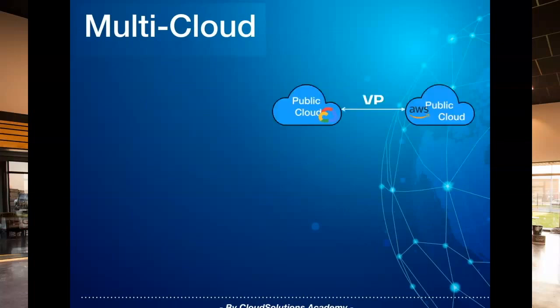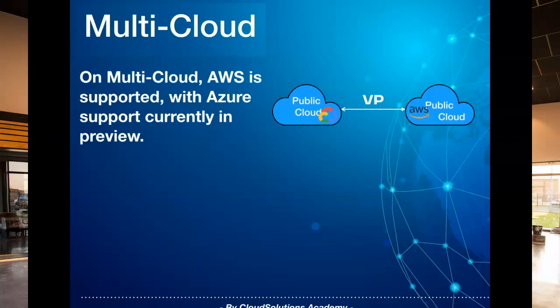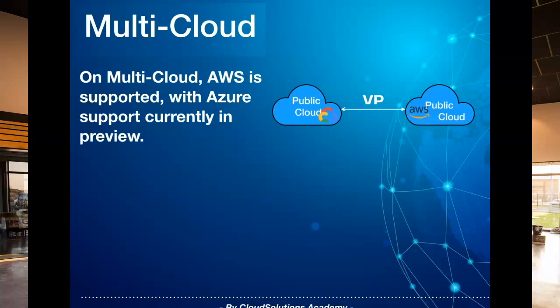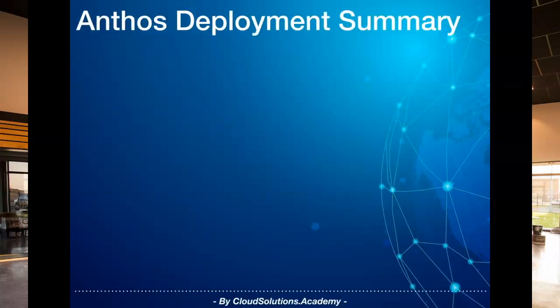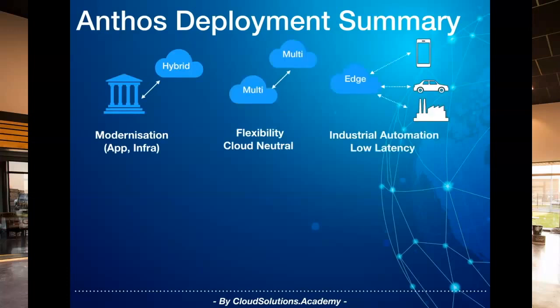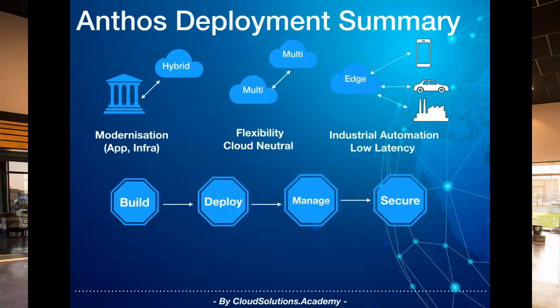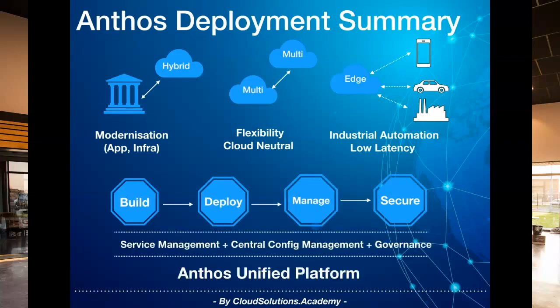With respect to multicloud, Anthos is currently supported on AWS with Azure support currently in preview. Even though multicloud support may not be a current priority for your enterprise, enterprises should adopt cloud-native applications and principles so they can transition to a multicloud environment seamlessly based on future requirements. In this way enterprises can be multicloud ready. To summarize, with Anthos you get a unified development and deployment experience across environments and a single management view to manage your multicloud environment. So this concludes our session. Hope you found the information useful — please subscribe to the channel to receive regular updates. Thank you for watching.